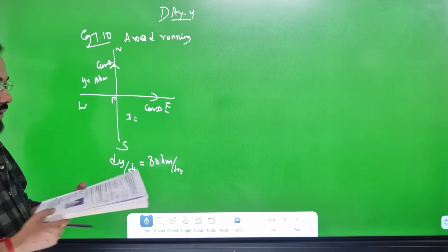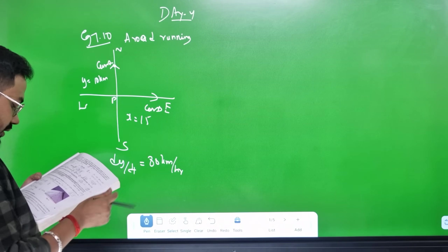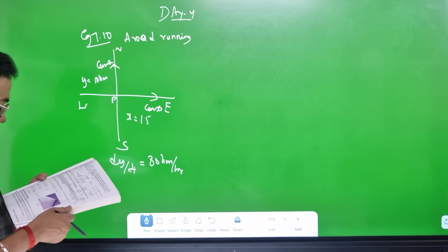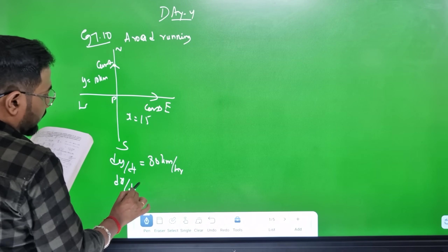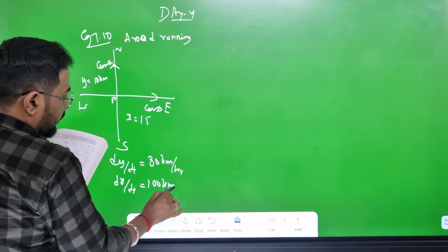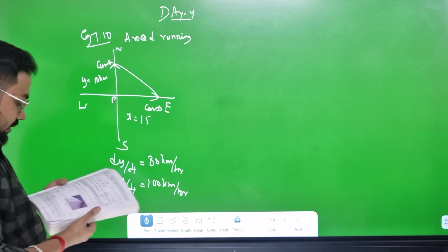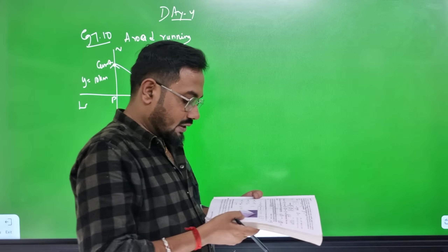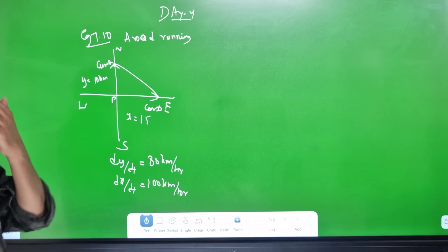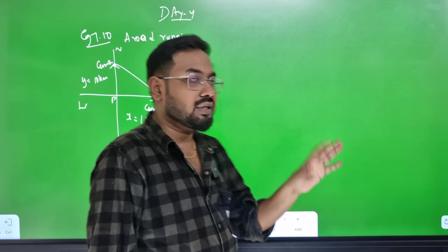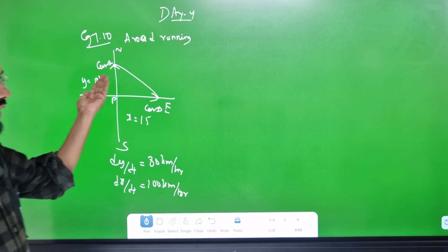Car A travels at 80 km per hour (dy/dt = 80 km/hr). Car B is 15 km from P, and travels at 100 km per hour (dx/dt = 100 km/hr). The question asks: how fast is the distance between the two cars changing?